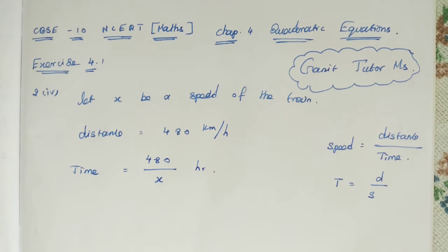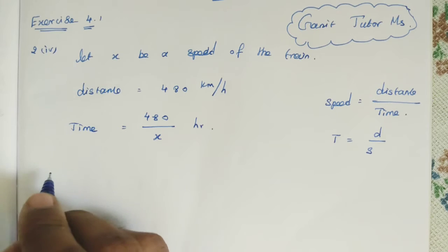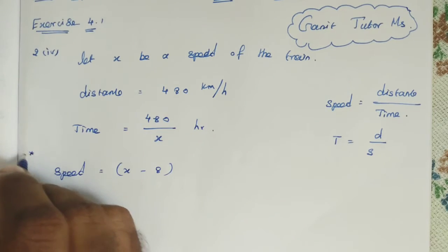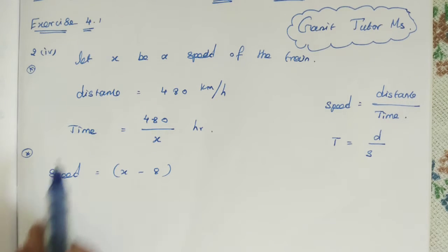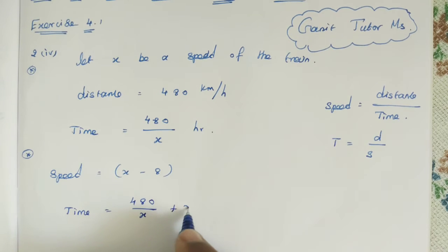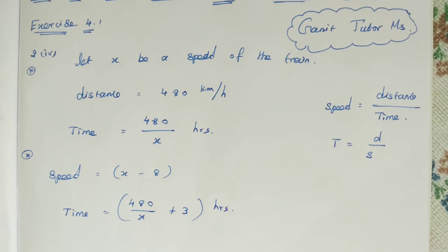For the second condition, the speed had been 8 kilometers less — that means speed equals x minus 8. And it will take 3 hours more to cover the same distance. So the time in the second condition is 480 divided by x, plus 3 hours. The distance remains the same, which is 480. We need to find the speed of the train.